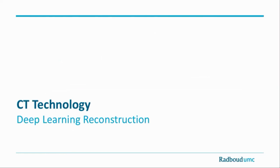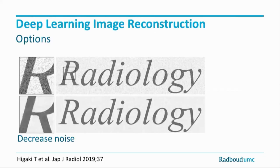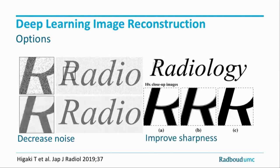The solution is deep learning reconstruction. With deep learning reconstruction, you can choose to decrease image noise, but you can also use it to improve sharpness. Here's an example where you can see the pixelation and classic interpolation versus the high-resolution deep learning reconstruction — really good resolution from a low-resolution data set.